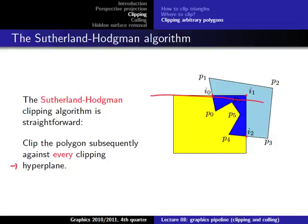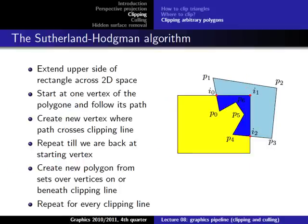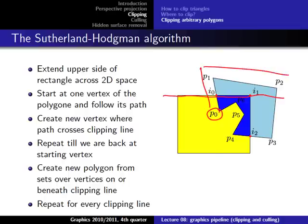The idea is we take the first hyperplane and cut off that part, then take the next one and cut off that part, check the others and see there's nothing there, and then we have our clipped polygon — the dark blue one. The steps are illustrated here. We take the upper side and extend it to a line in 2D, then start at one vertex of the polygon, say P0, and follow the path around until we reach P0 again.